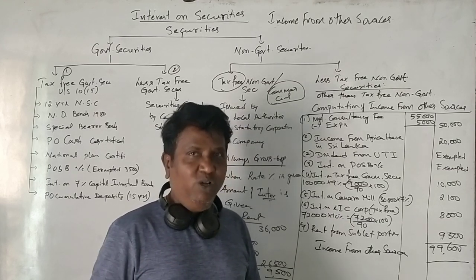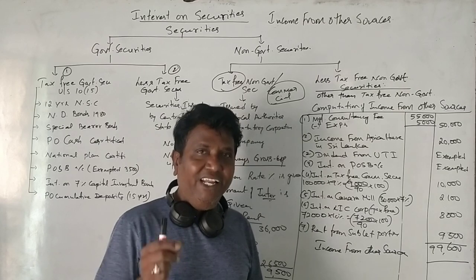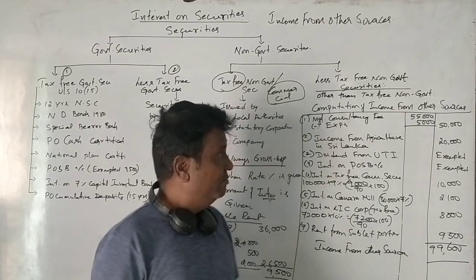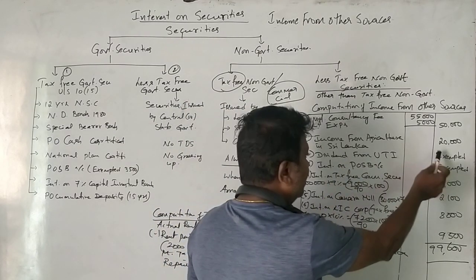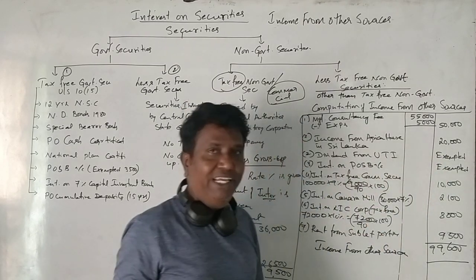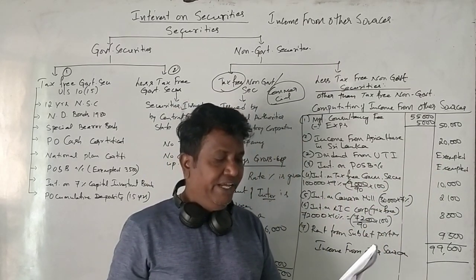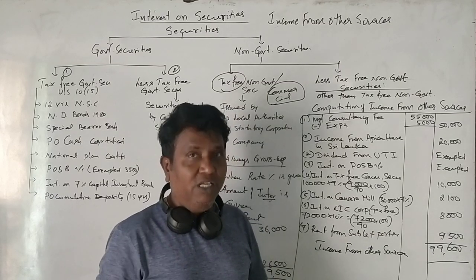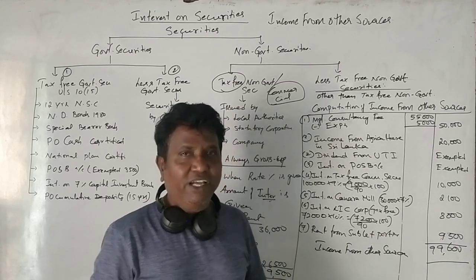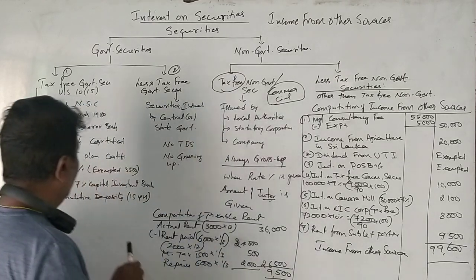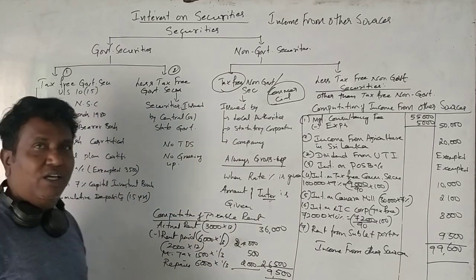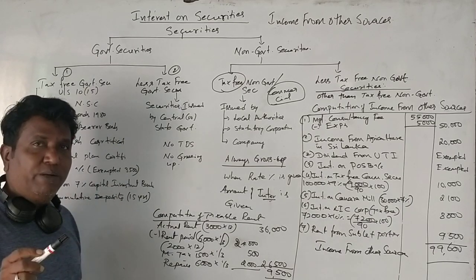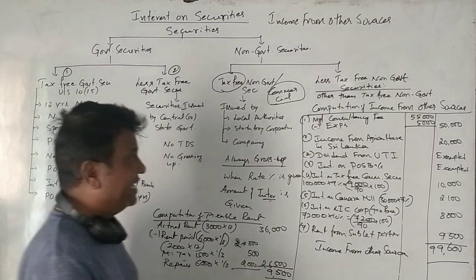Dividend from UTI and Indian company — all dividends received from Indian domestic companies are fully exempted. Next point: interest on post office savings bank account is ₹1,000 rupees.